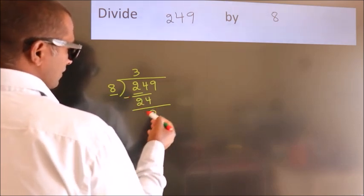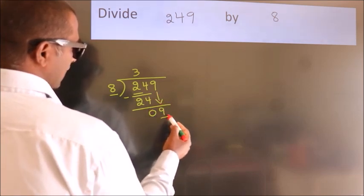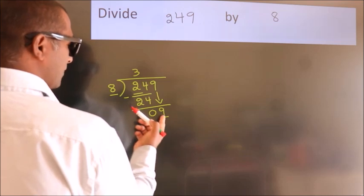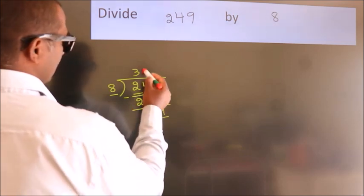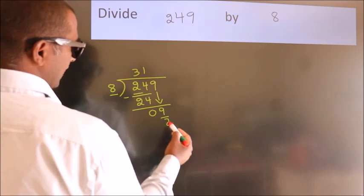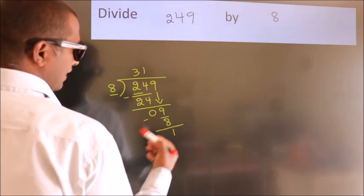After this, bring down the beside number. So 9 down. A number close to 9 in 8 table is 8 once 8. Now we subtract. We get 1.